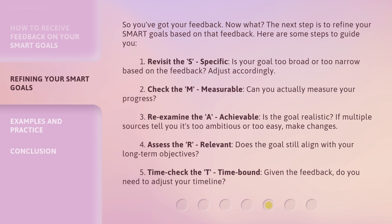Number four: assess the R — Relevant. Does the goal still align with your long-term objectives? Number five: time-check the T — Time-bound. Given the feedback, do you need to adjust your timeline?